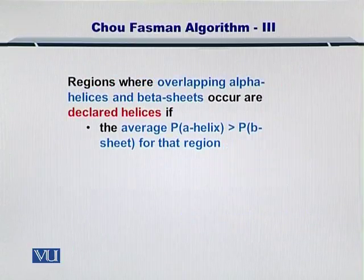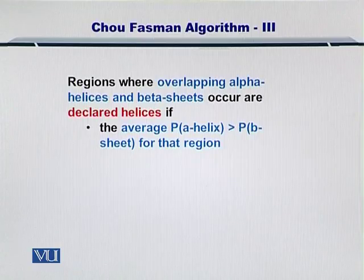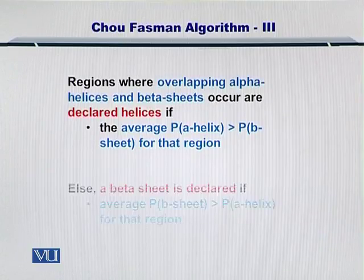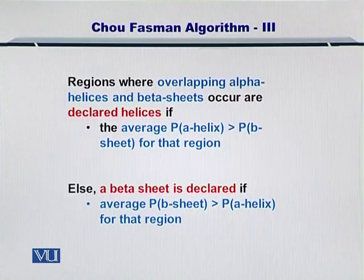However, there can be cases where the second condition is not met, so it needs to be evaluated again. For regions where you have overlapping alpha helices and beta sheets, you need to compare their overall propensities. If the average propensity for all of those amino acids for forming an alpha helix is greater than the average propensity for forming a beta sheet, then an alpha helix is finalized. However, if the reverse is true — that is, the average propensity to make a beta sheet is greater than the propensity to form an alpha helix — then a beta sheet is finalized.